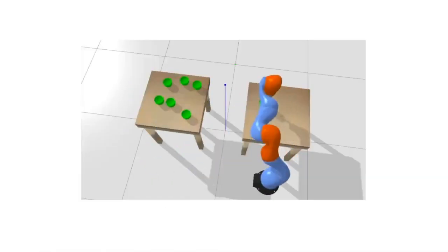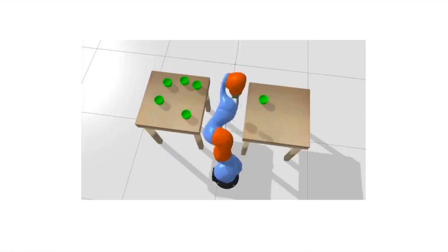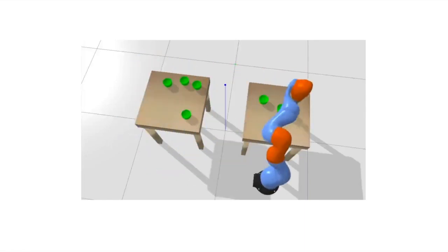We address the problem of learning values for continuous operator parameters in task and motion planning, such as robot end-effector grasping and placement poses in a tabletop manipulation problem, as shown.